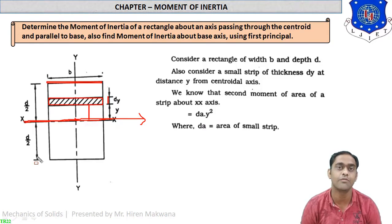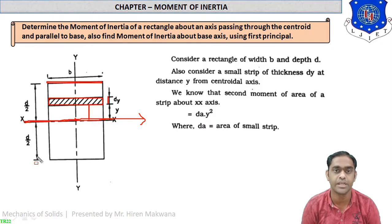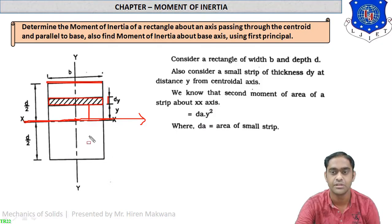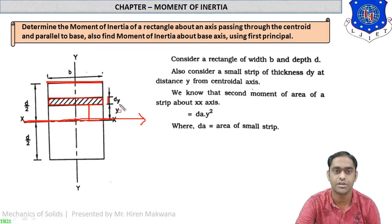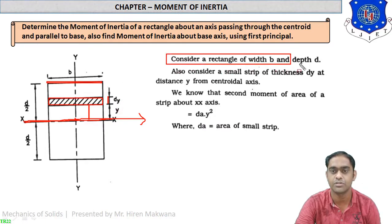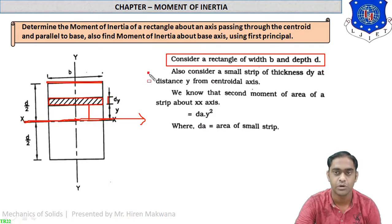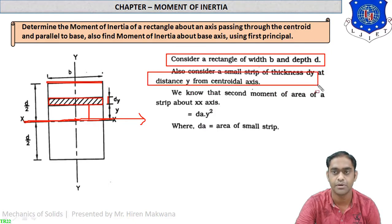The area of the elemental strip is equal to b times dy. Consider a rectangular strip of width b and depth d. Also consider a small strip of thickness dy at a distance y from the centroidal axis.